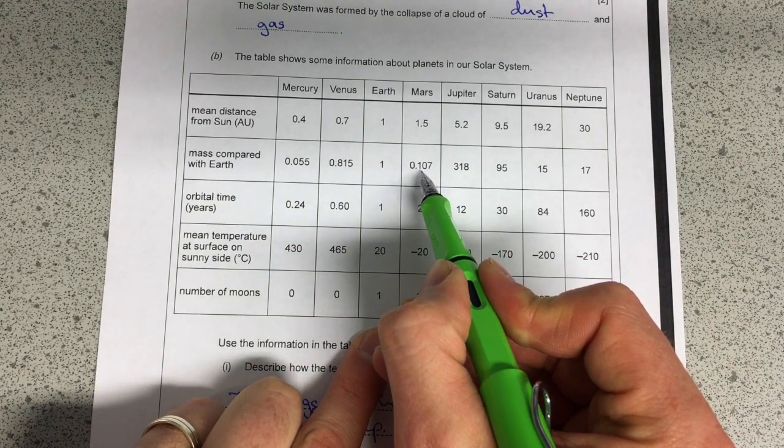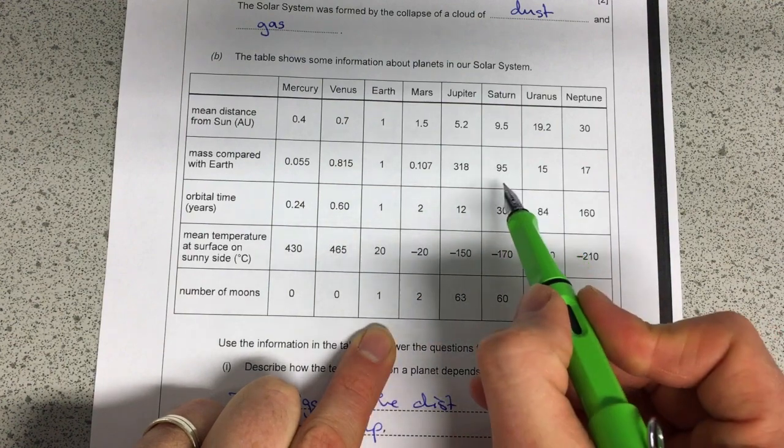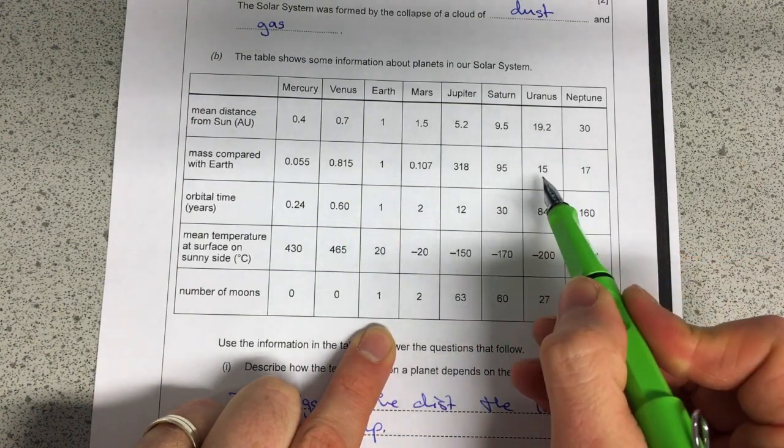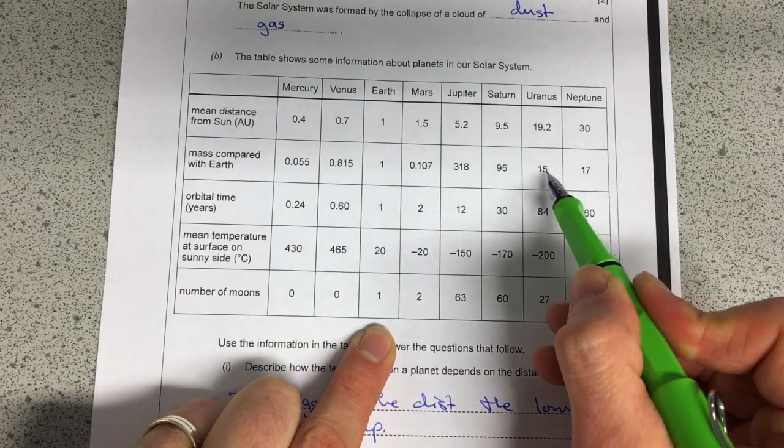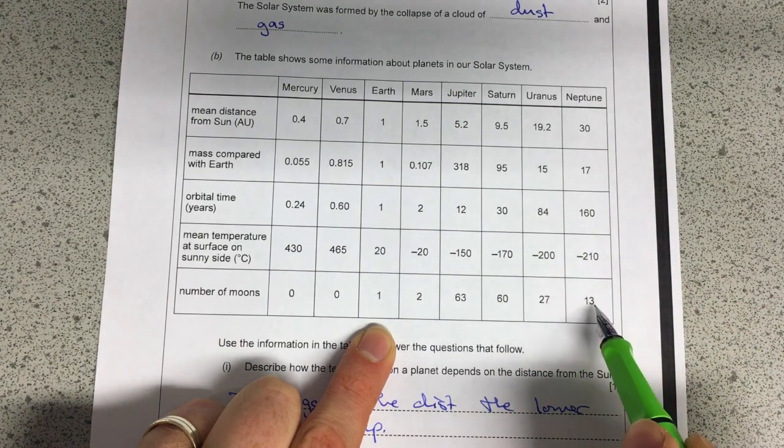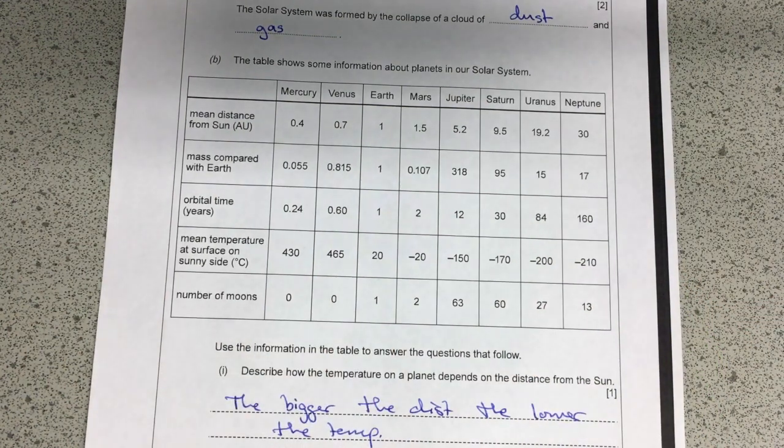So Mars has twice as many moons as Earth but if you have a look it's actually much lighter. And then again here we've got Neptune is heavier than Uranus but it's got less moons. So the pattern doesn't quite fit.